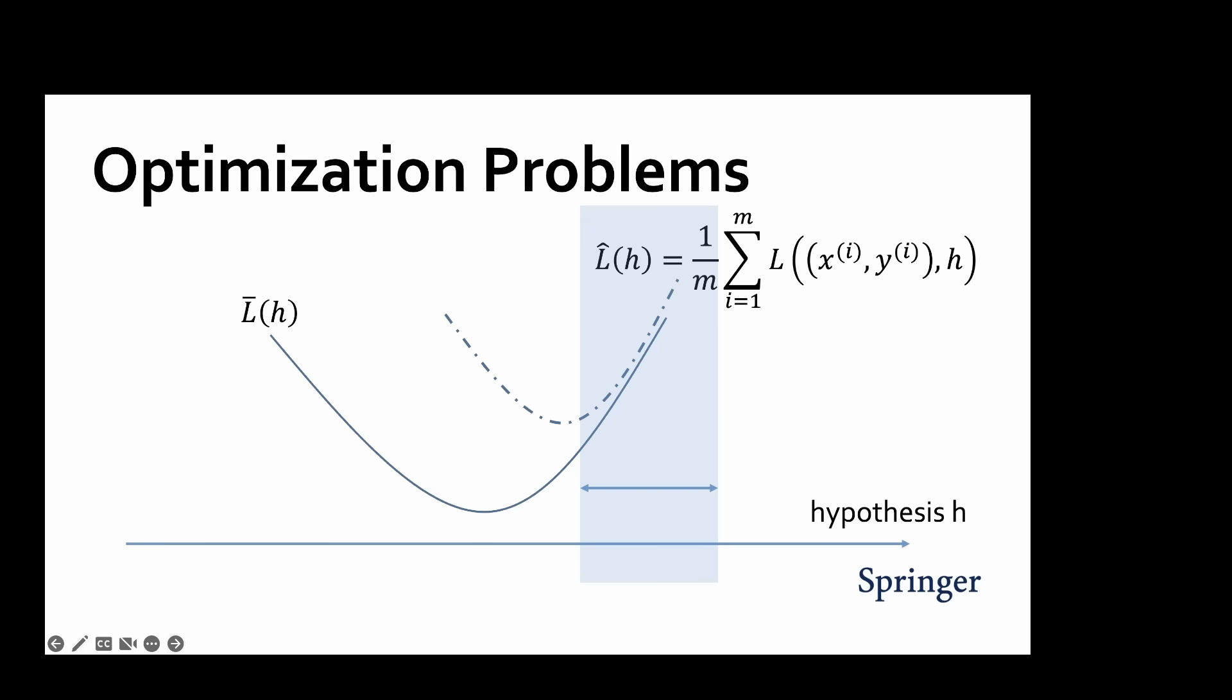Mathematically, empirical risk minimization is an instance of an optimization problem. The objective function of this optimization problem is the empirical risk, viewed as a function of the hypothesis ranging over the hypothesis space. The shape of this objective function in turn depends on the design choices for the data, model and loss function.